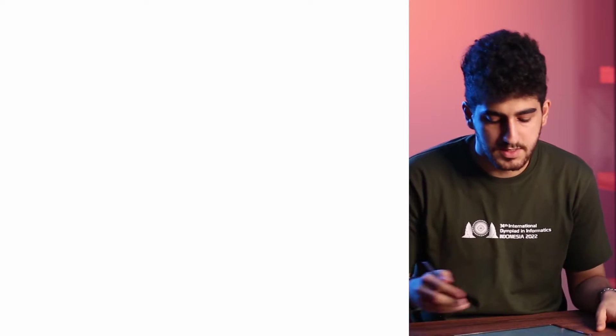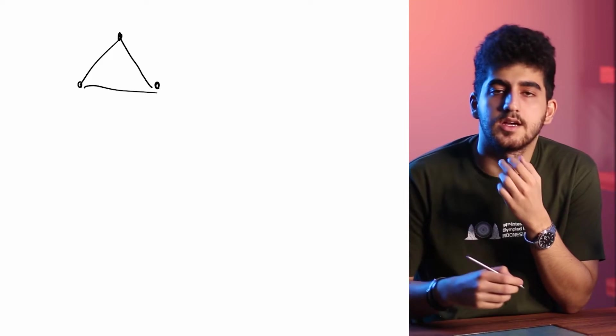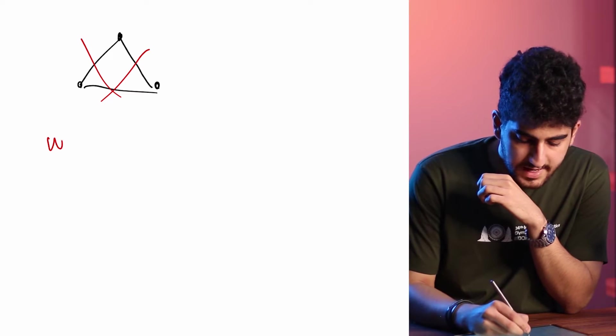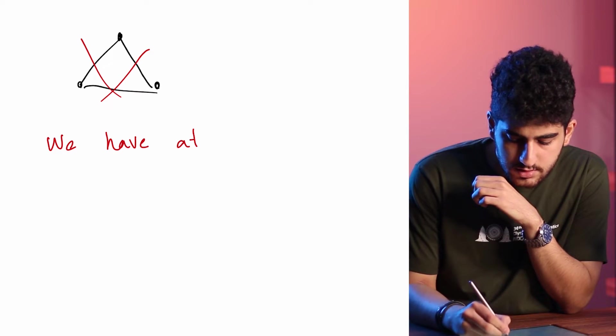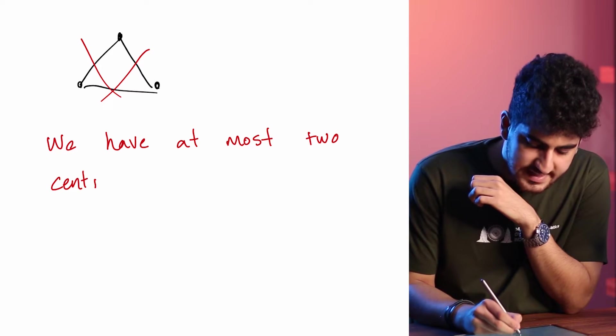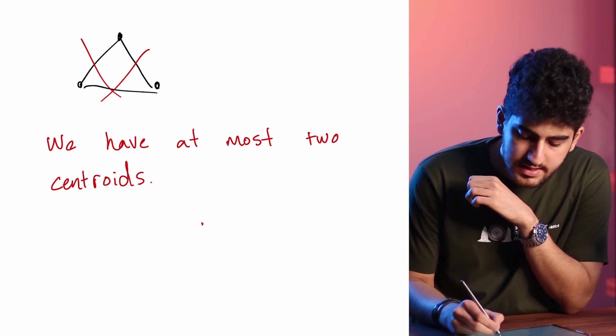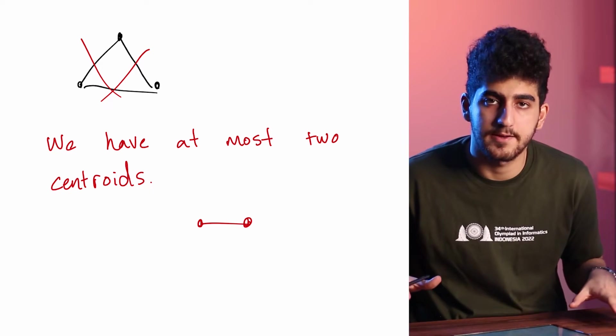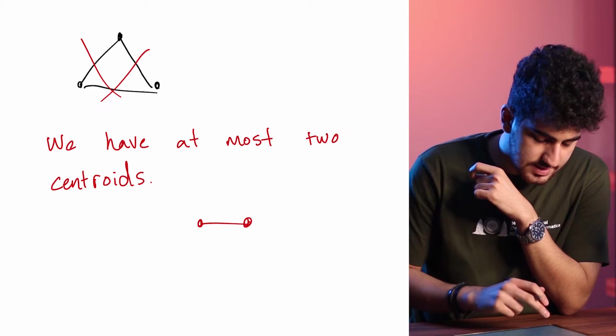Now that we know that all the centroids should be adjacent, it's easy to say that we cannot have three centroids. Because if we have three centroids, it's not possible that all of them have an edge to each other — otherwise we would have a triangle, a cycle of length three. So it's not possible. So we have at most two centroids, and if we have two centroids, then these two centroids should be adjacent. They should have an edge to each other. This is the only way.